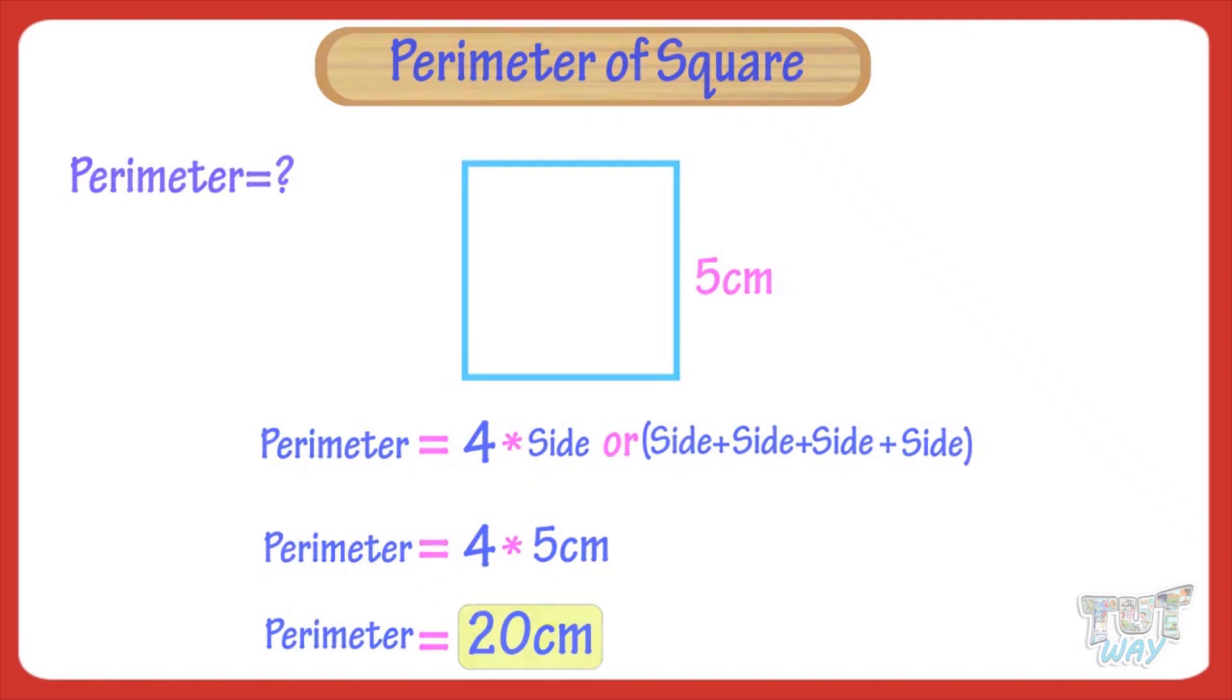Now, let's take another example. Here we have a square with side 3 cm. Let's find its perimeter.